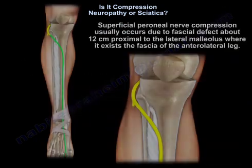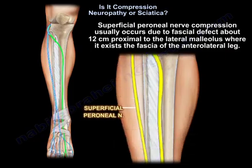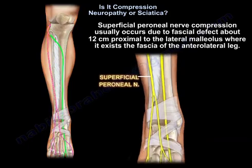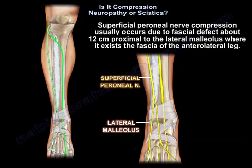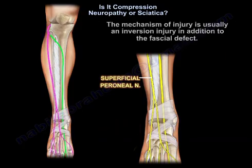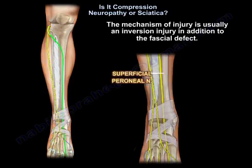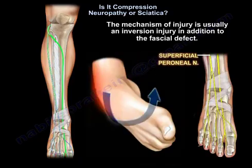Superficial perineal nerve compression usually occurs due to a fascial defect about 12 cm proximal to the lateral malleolus, where it exits the fascia of the anterolateral leg. The mechanism of injury is usually an inversion injury in addition to the fascial defect.